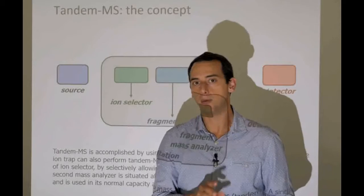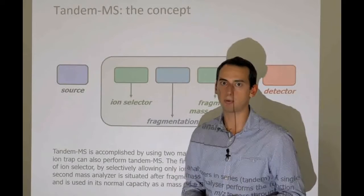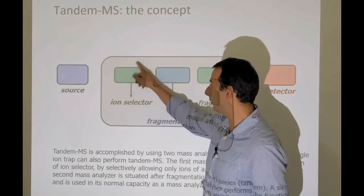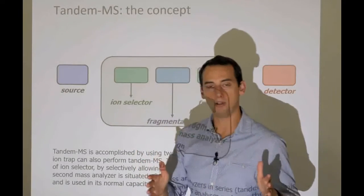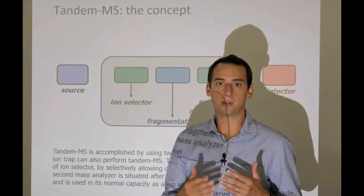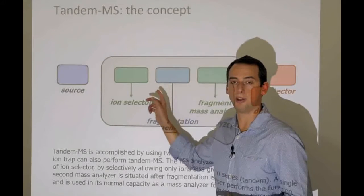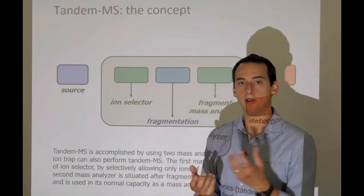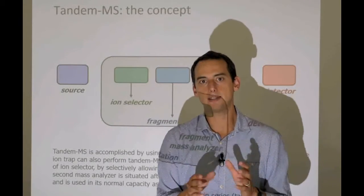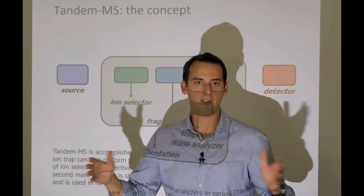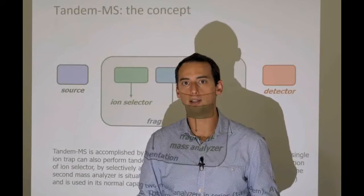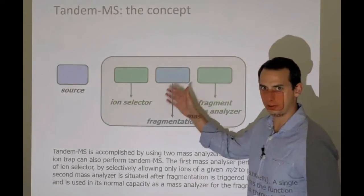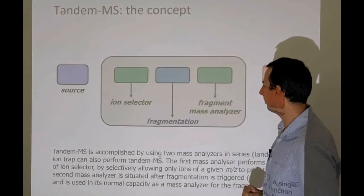Mind you, modern approaches called data independent acquisition methods, of which SWATH is probably the most prominent example, actually gets rid of the ion selector by and large or sets a really wide ion selection window and then fragments multiple ions at the same time. The corollary there is that the fragments you get are no longer attributable easily to a single precursor analyte. So what has to happen is some kind of trick in the software to try and disentangle this mess. These approaches are very new, very interesting and very actively being developed right now.